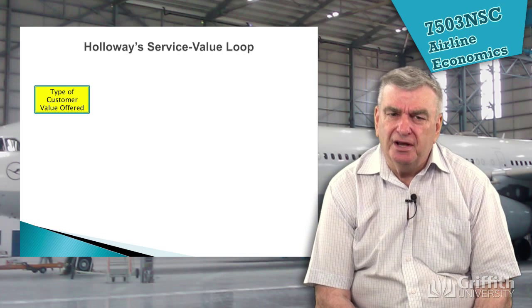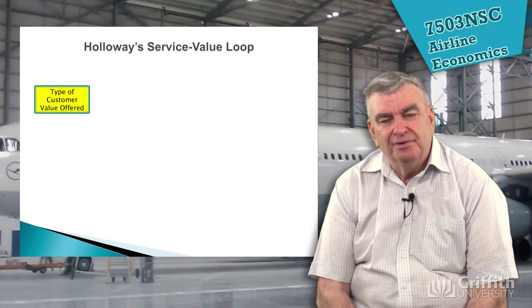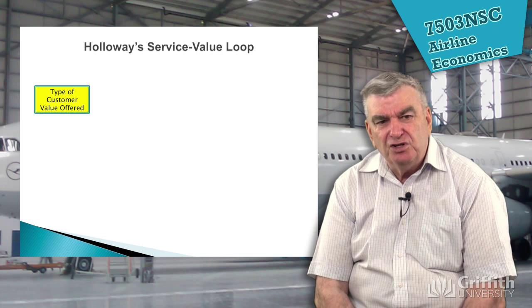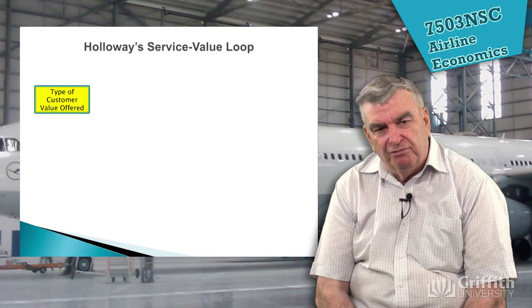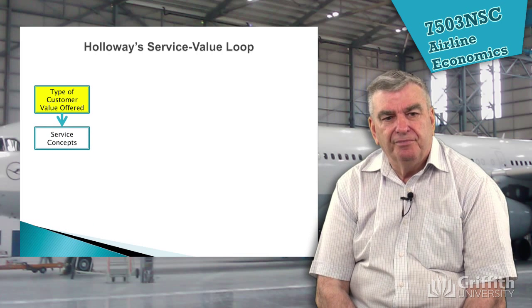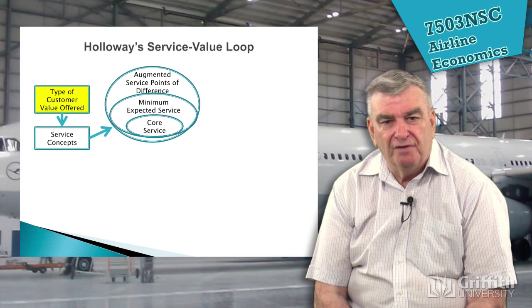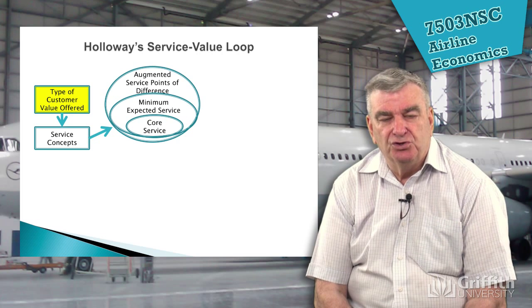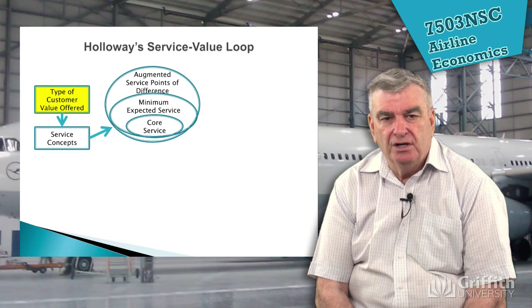One of the particular things we'll be studying amongst all the different processes is Holloway's service value loop. We'll go into this in a lot more detail, but we'll just go quickly over it. First of all, we look at the type of customer value that's offered — it's there in every piece of advertising about a flight. We'll look at the service concepts that go with providing that offer, and of course the core service. For example, when we travel on board a flight, we expect a clean aircraft, a seat with a working seat belt, and cabin attendants who show us where we need to go.